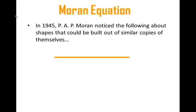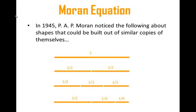This was investigated in 1945 by a mathematician named P.A. Moran, who noticed the following thing about shapes that can be broken up into similar copies of themselves. If you built a line out of two segments scaled down by a half, or three segments scaled down by a third, or a segment scaled down by a half, a third, and a sixth together — if you took the scaling factors and added them up, you always got 1.